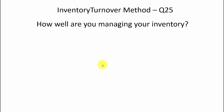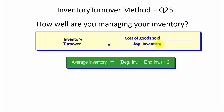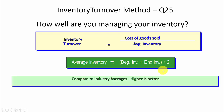Let's look at the last question, which is inventory turnover — question 25. This ratio measures how well you're managing your inventory. Inventory turnover is calculated by taking cost of goods sold divided by average inventory. Average inventory is the beginning inventory plus ending inventory, divided by two. Higher is better, and you want to compare it year to year and to industry peers — for example, Coca-Cola compared to Pepsi.